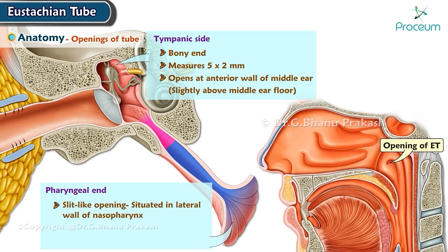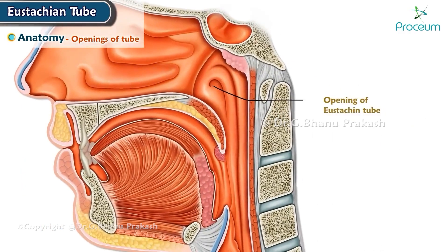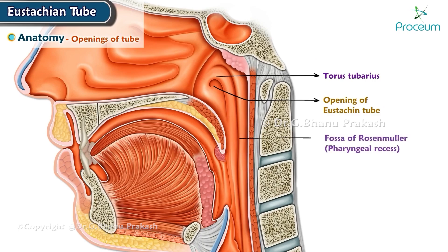The pharyngeal end is a slit-like opening situated in the lateral wall of the nasopharynx. It is about 1.25 centimeters behind the posterior end of the inferior turbinate and is usually closed. On the posterior end, the cartilage produces an elevation known as the torus tubarius. Posterior to the torus tubarius there is a depression named the fossa of Rosenmüller, which is a common site for malignancy of the nasopharynx.